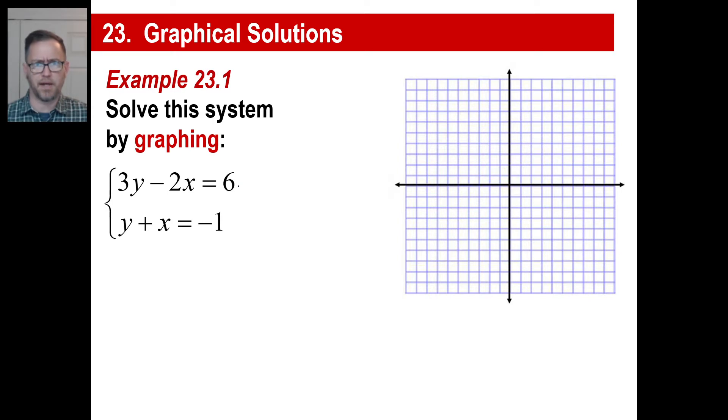Now, you might look at this and go, what? I don't know how to graph that. Yeah, you do. This is a y, that's an x. Just set it up to where you have y equals mx plus b, right? So let's just take this one here and kind of mash it around so it looks like y equals mx plus b. Well, first thing we'll do is 3y, move 2x over. That's going to be 2x plus 6. And if you divide by 3, your equation becomes y equals 2 thirds x plus 2.